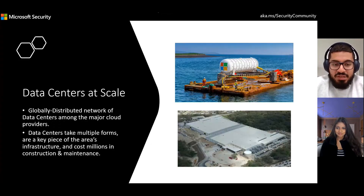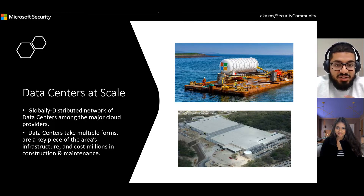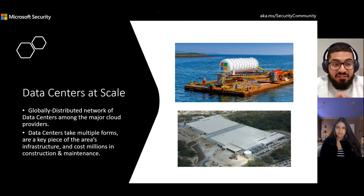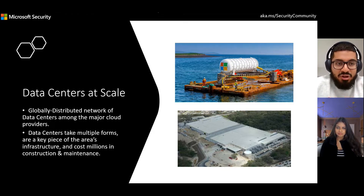The scale at which these data centers operate is huge. There's a global footprint — data centers reach almost every corner of the world, even in the ocean. Some data centers are actually in the water to help cool the components inside. They usually span multiple football fields; these campuses are massive and take a lot of energy and money. As you can probably tell, they're very attractive targets for malicious actors because of how key they are to an area's infrastructure and to the internet's infrastructure — they pretty much help run the internet that 99.9% of the world is familiar with.